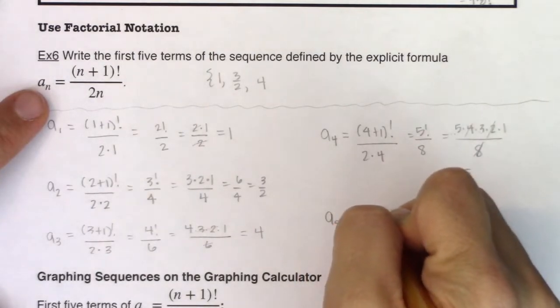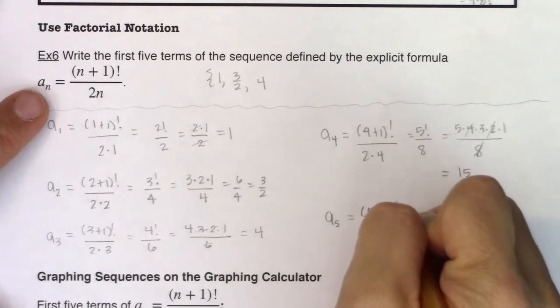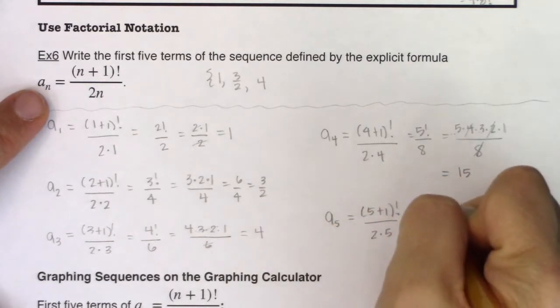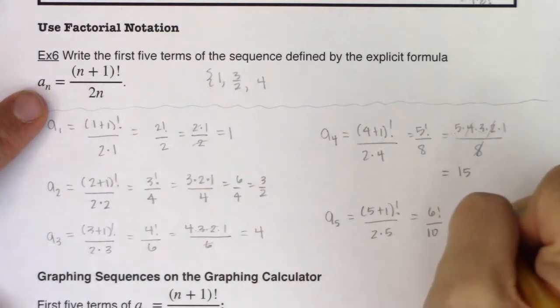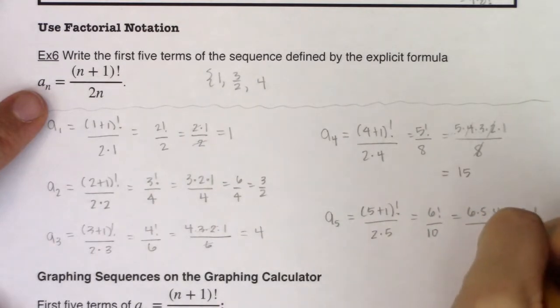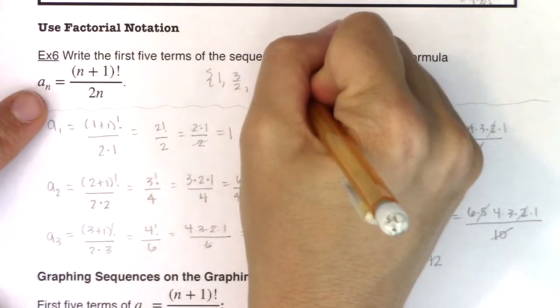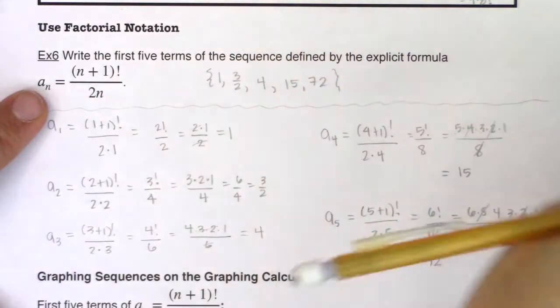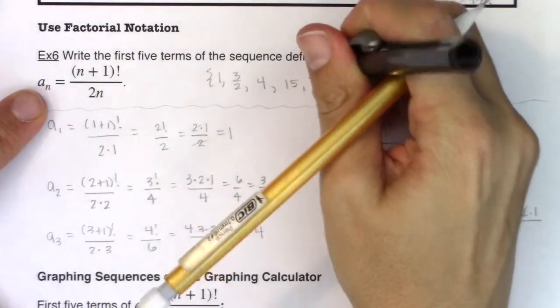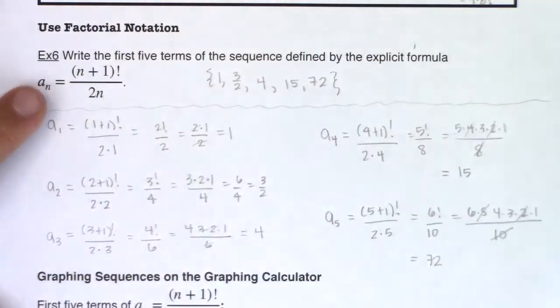So on the numerator, I have 5 times 3, which is - I can do the math in my head. Hold up, that's 15. Nailed it. And then 15 times 1 is just 15. So all I have here is 15. a sub 5. We've got (5+1)! over 2 times 5. So I'm looking at 6! over 10, which would be 6 times 5 times 4 times 3 times 2 times 1 all over 10. And I can see the 5 and the 2 cancel. 6 times 4 is 24. 24 times 3 should be 72. So as I finish my sequence out, there we go.